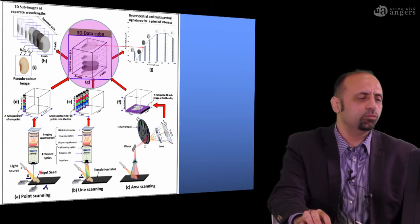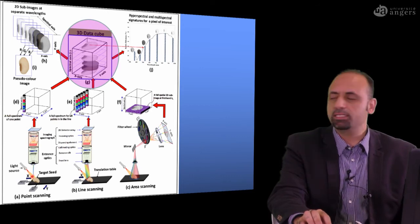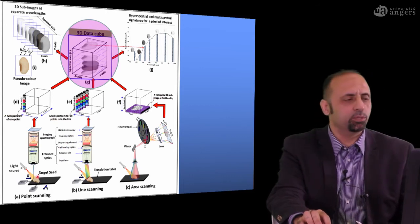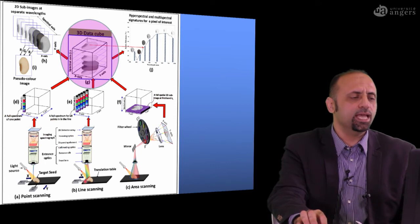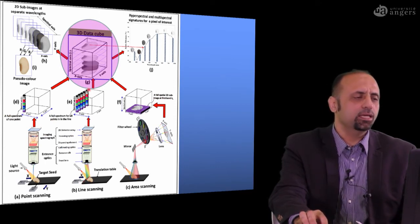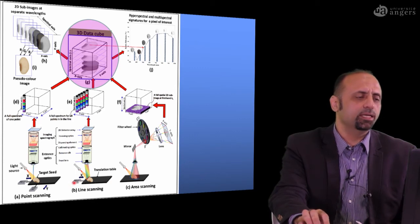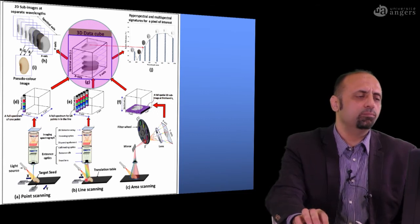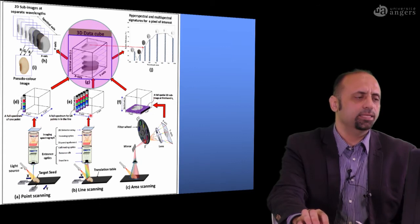In the line scan method, instead of acquiring spectra point by point, we scan the sample line by line. We only need to move the sample in one linear direction, and with each movement we capture the spectra of one full line. At the end, we have the full 3D data cube.